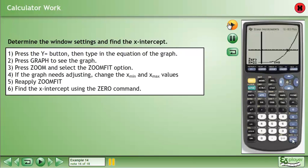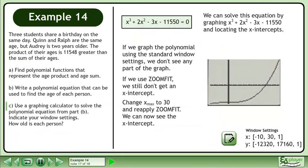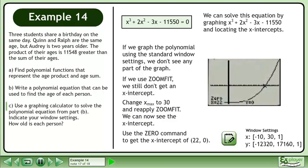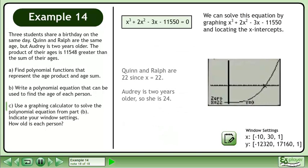See the x-intercepts here. Use the 0 command to get the x-intercept of 22. Quinn and Ralph are 22, since x equals 22. Audrey is 2 years older, so she is 24.